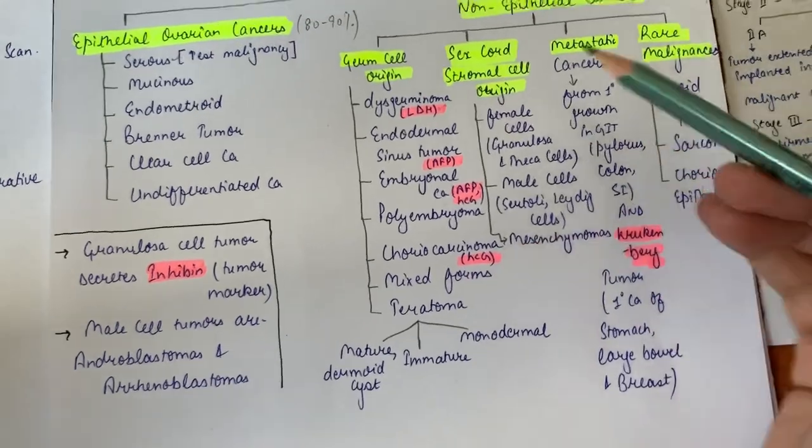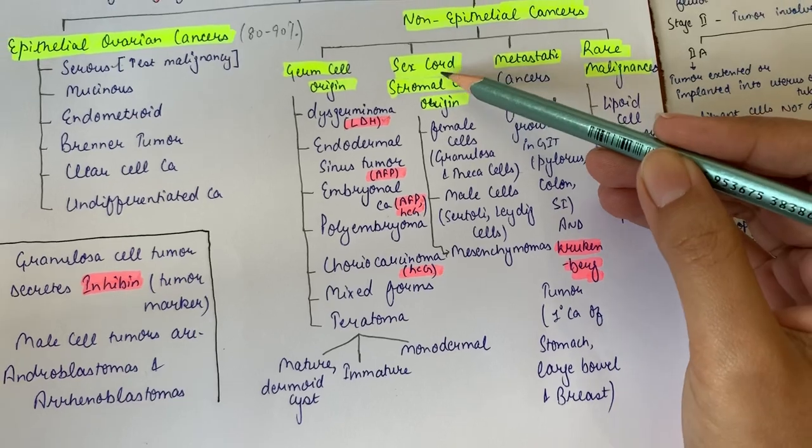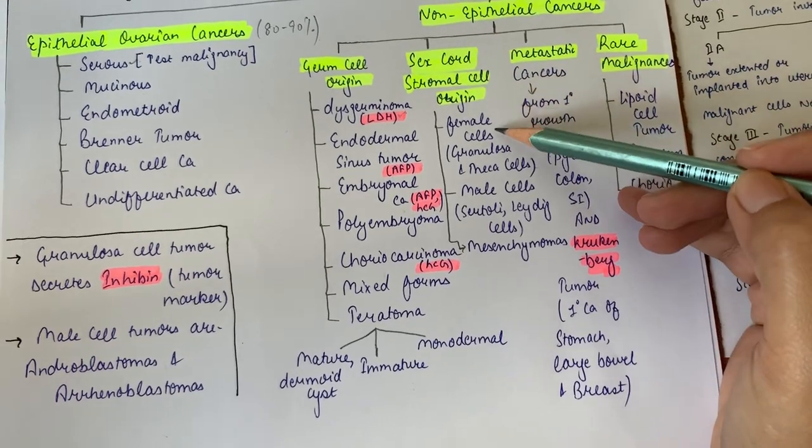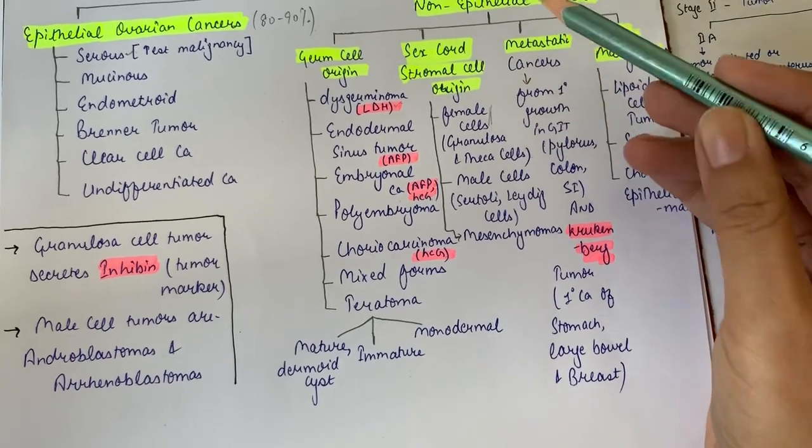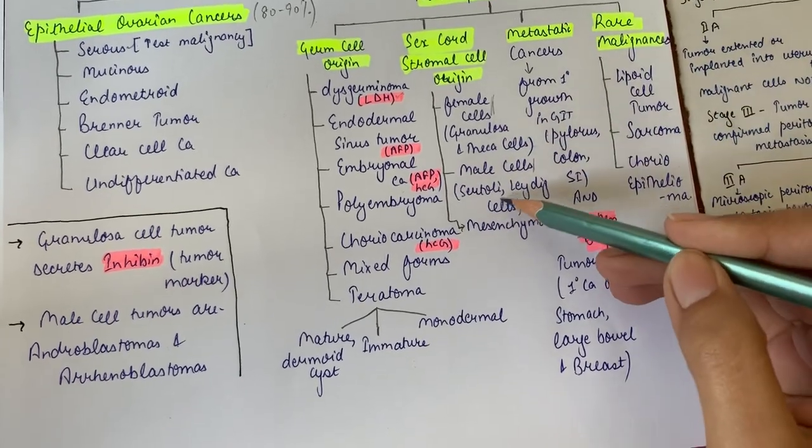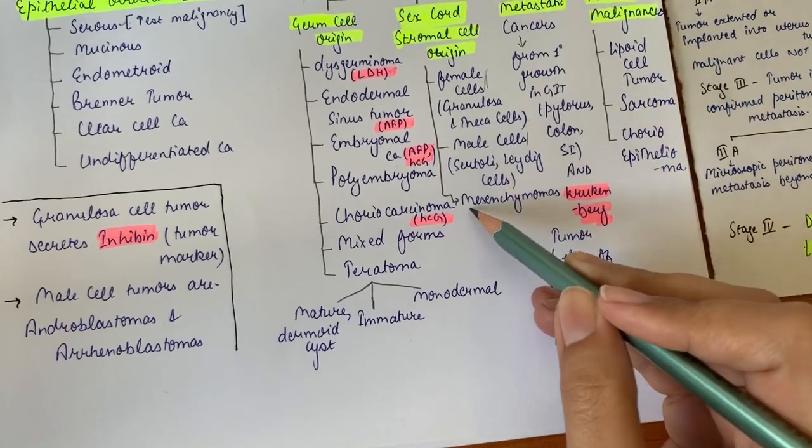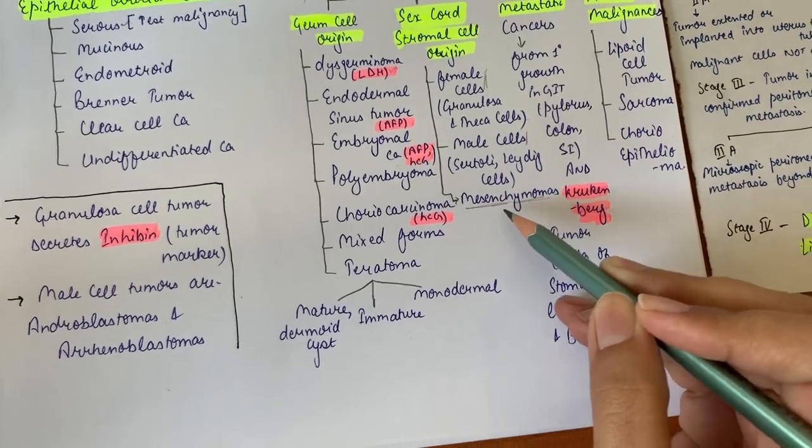Sex cord stromal cell origin - as they originate from sex cords, they either consist of female cells or male cells. Female cells are granulosa or theca cells, and male cells are Sertoli or Leydig cells. We also have undifferentiated types that we call mesenchymomas.